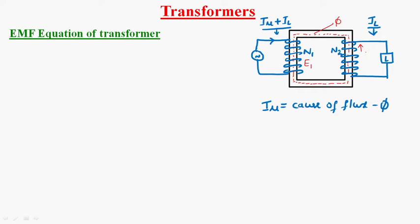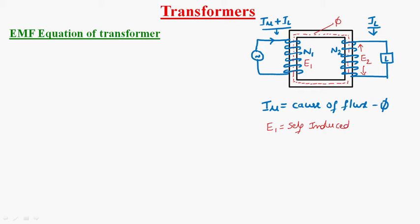This results in the production of some EMF, E2. Here, E1 is called the self-induced EMF and E2 is called the mutually induced EMF. Now what we are going to do is derive the EMF equation — that is, what is E1 and what is E2.